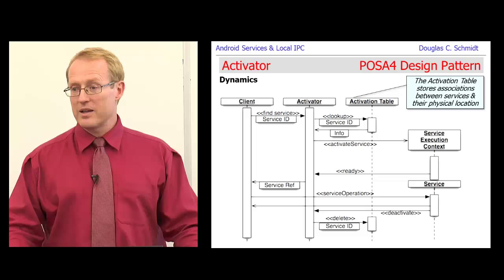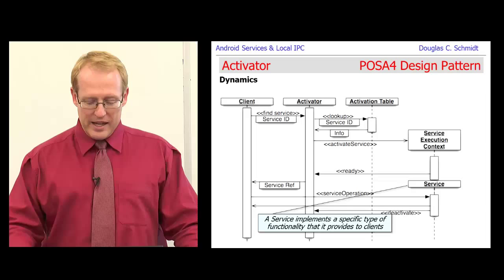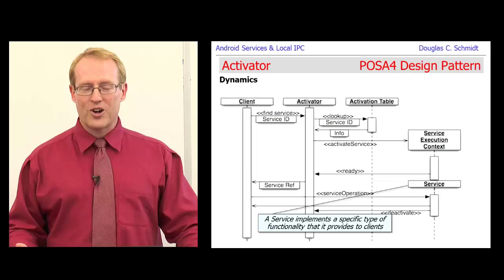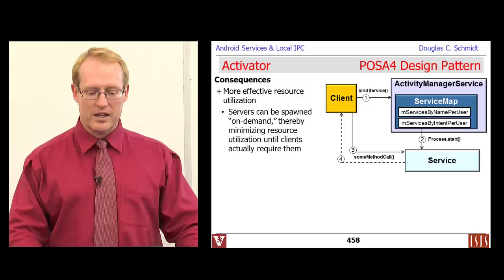There's no one right answer — the pattern gives you different trade-offs between fine-grained versus coarse-grained launching of activities. The activation table is implemented in Android as a map — several hash maps. Finally, we have the service itself, which is the thing that does the work. In Android it really is something called a service; in other environments it could be a function call, procedure call, or method call that gets run in response to a client invocation.